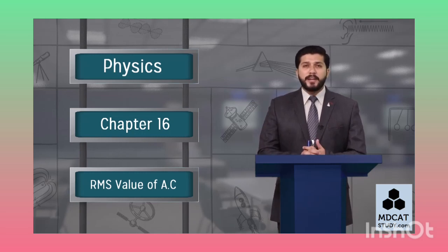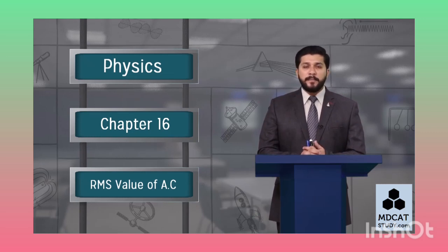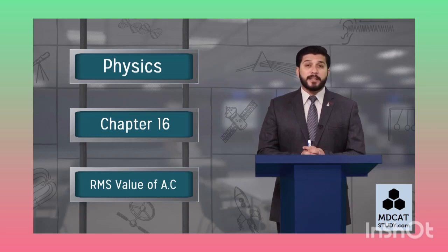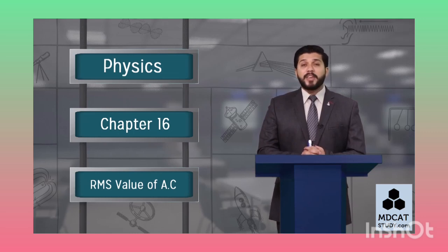جیسے کہ alternating current کی peak value کیا ہوتی ہے، peak to peak value کیا ہوتی ہے، instantaneous value کیا ہوتی ہے، rms value کیا ہوتی ہے۔ آپ سوچ رہے ہوں گے کہ یہ terminologies ہم نے chapter 13 میں direct current پڑھتے وقت نہیں پڑھی تھیں۔ تو ہم یہ بھی جانیں گے کہ یہ values کیا ہیں اور پہلے ان کی ضرورت کیوں نہیں پیش آئی۔ تو آئیے students آج کا lecture start کرتے ہیں۔